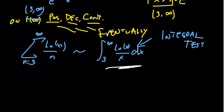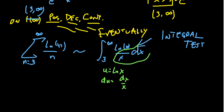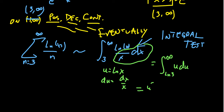Now let's find the antiderivative of ln(x)/x. I'll use a u-substitution: let u equal the natural log of x, so du equals dx over x. That factor is exactly present in the integrand. The integral becomes the integral of u du, with bounds changing to ln(3) on the bottom and infinity on the top. The antiderivative of u is u squared over 2, evaluated from ln(3) to infinity.